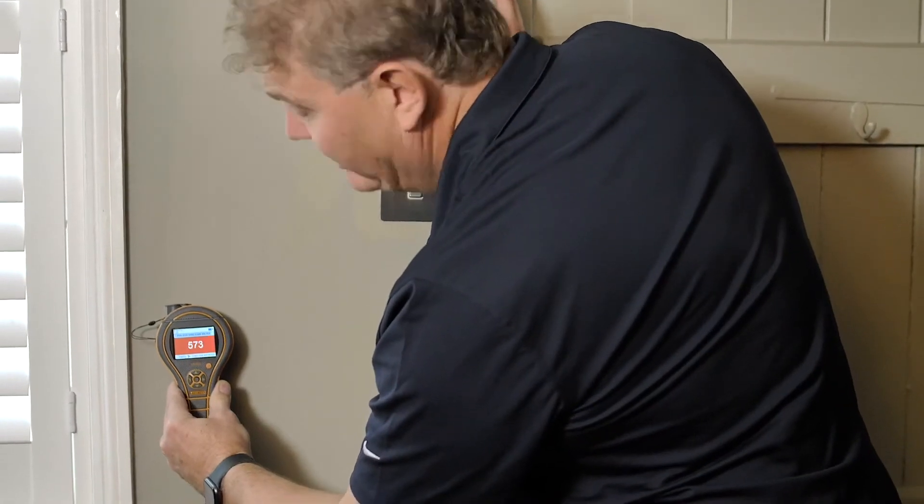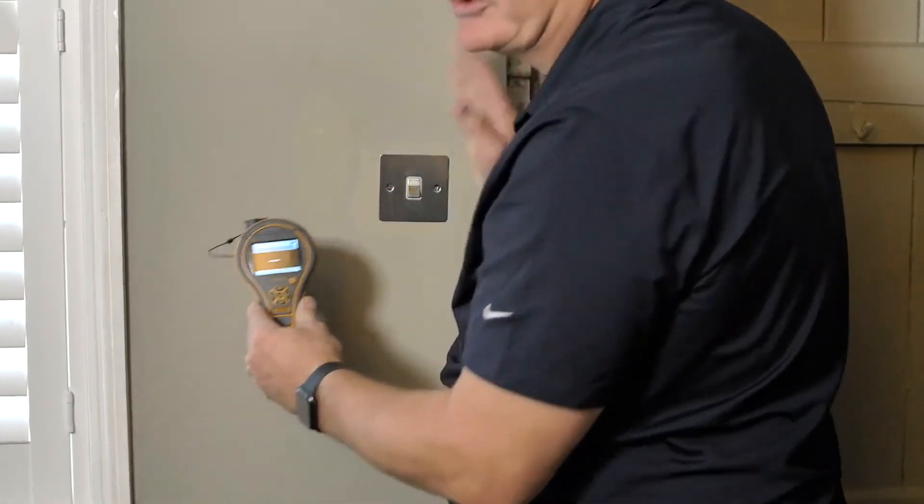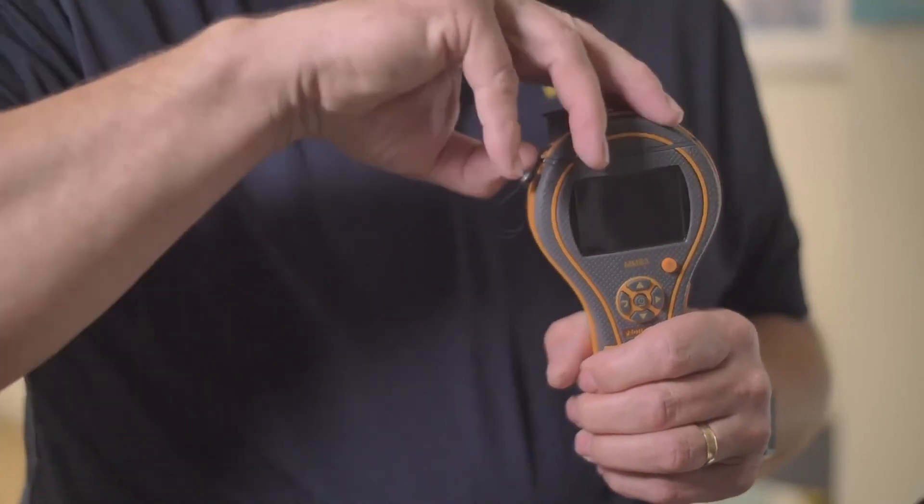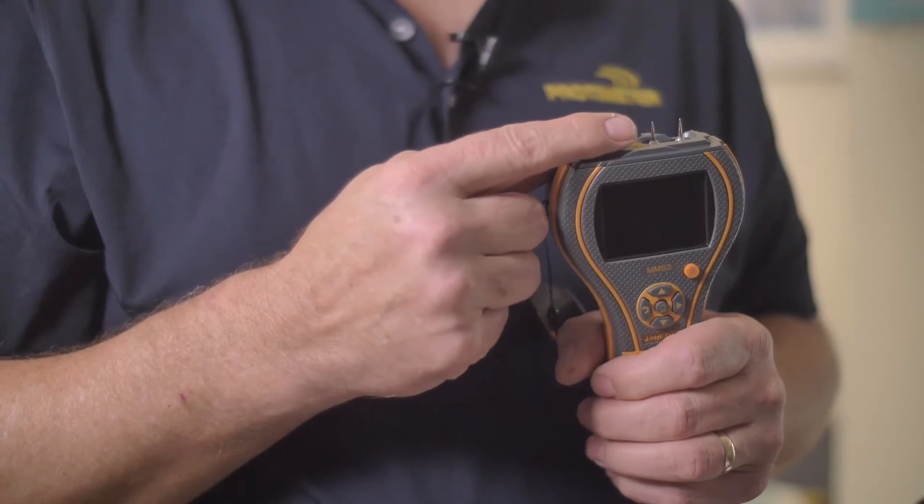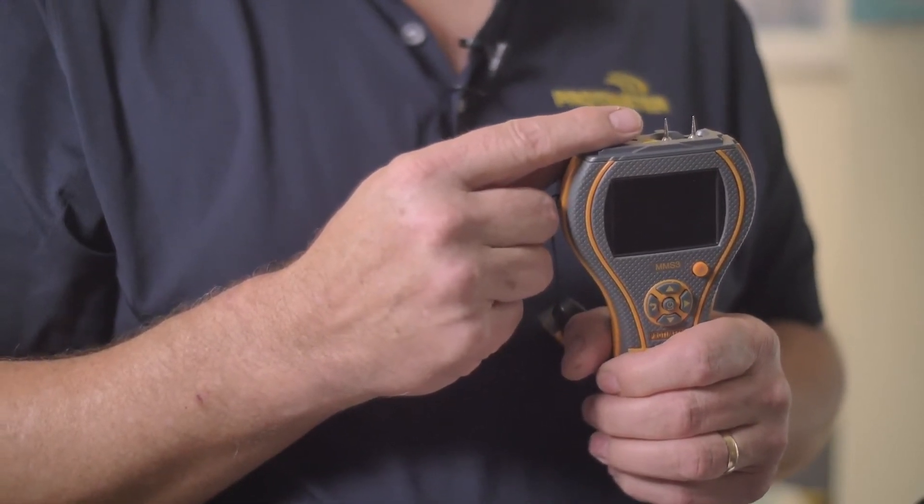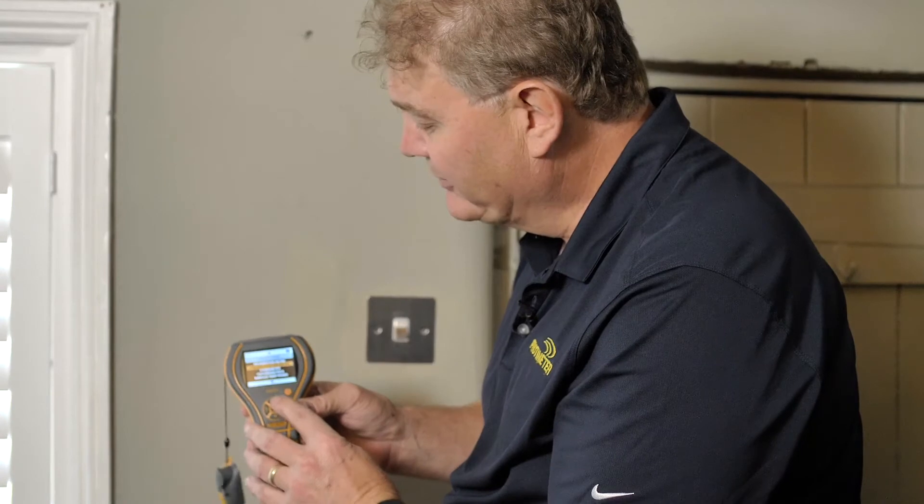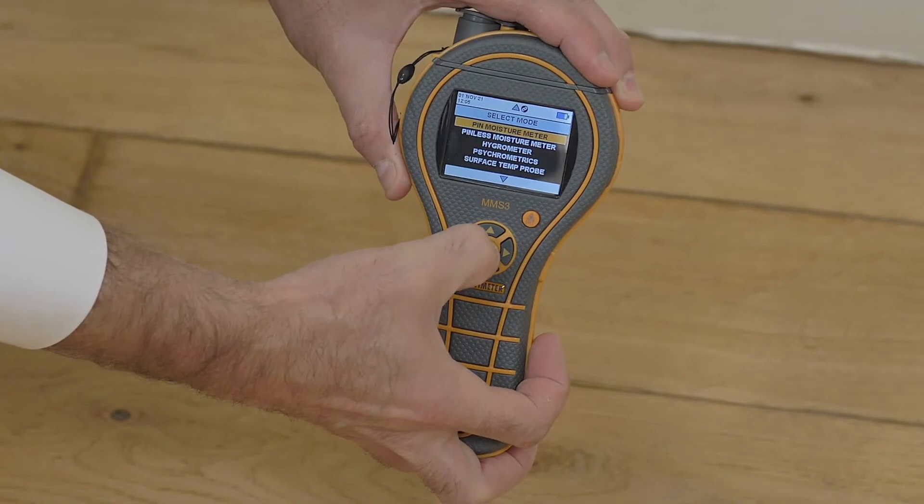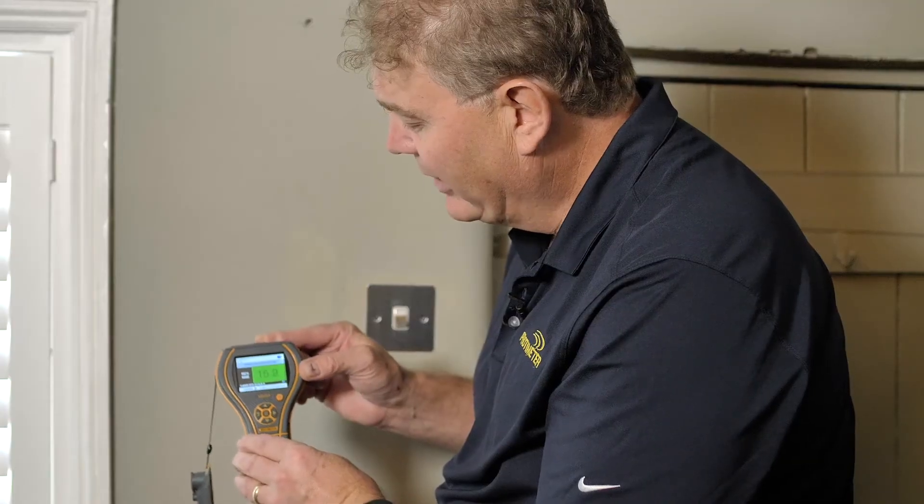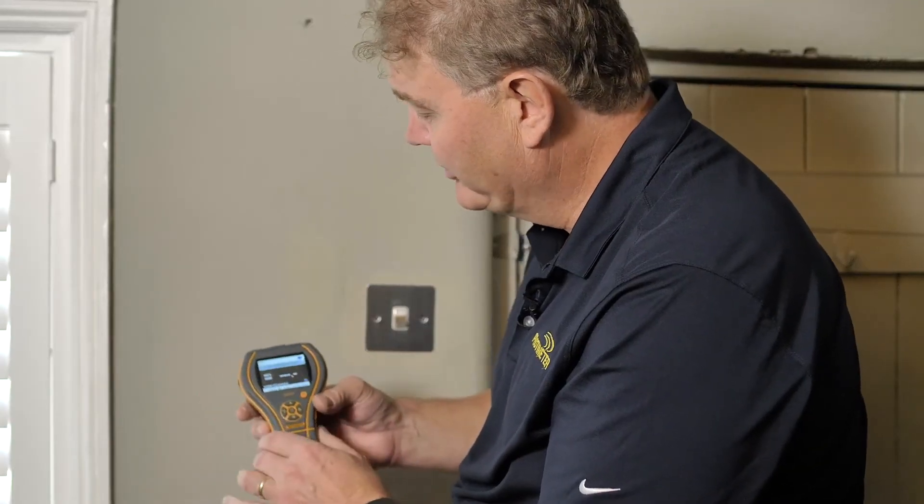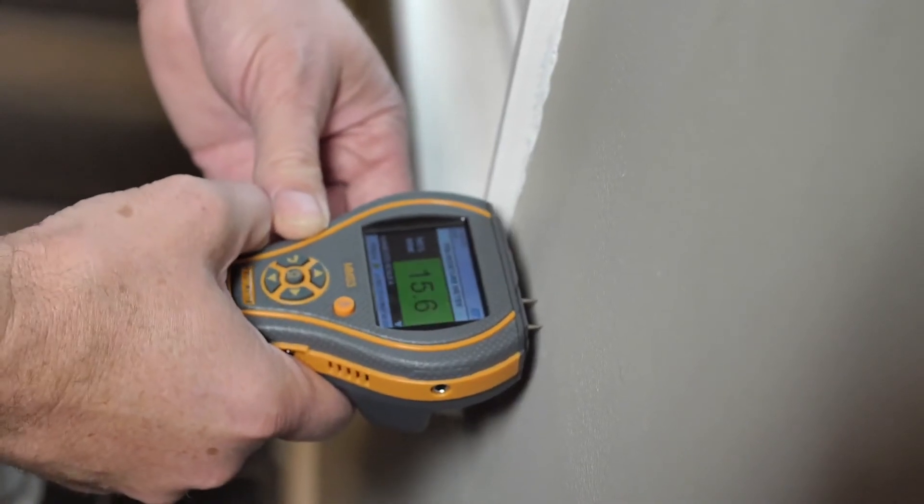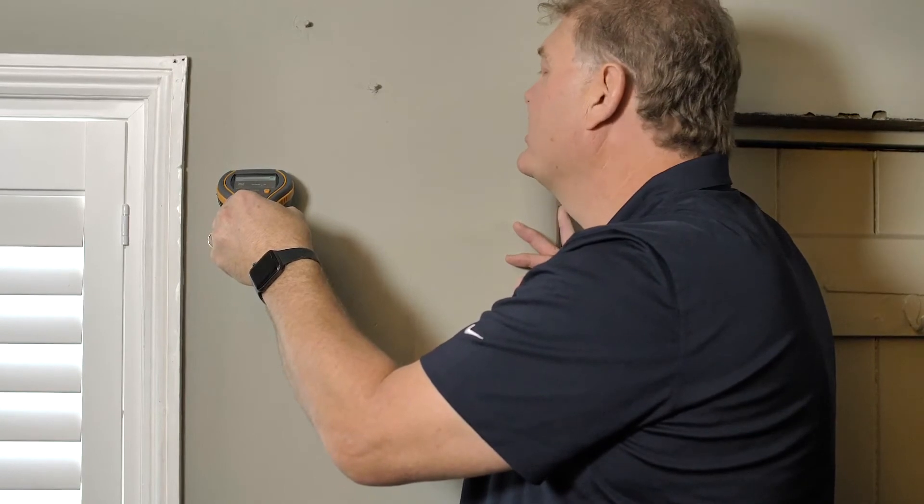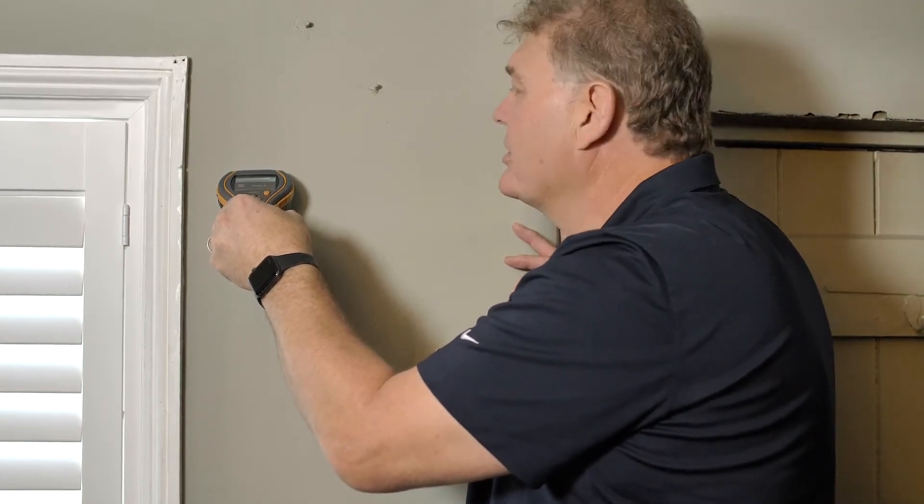What I would do now is confirm the presence of moisture using the PIN function. I would always use the PIN function to record actual moisture readings or wood moisture equivalent readings. To go to the PIN function, we just simply go back in the menu up to PIN moisture meter, and now we have the PIN mode. Again, you can see the green, yellow, and red as we move through the moisture measurement. It's important when you're taking moisture readings on the wall that you just break the surface, and this applies to both plaster construction and drywall.